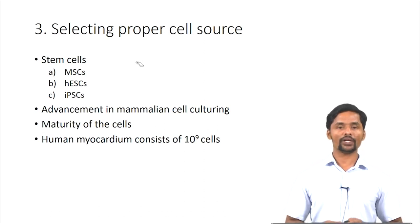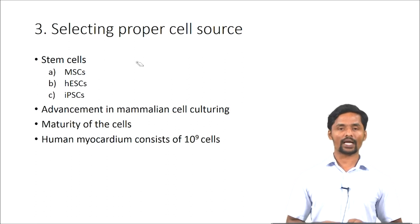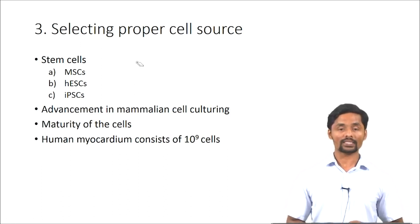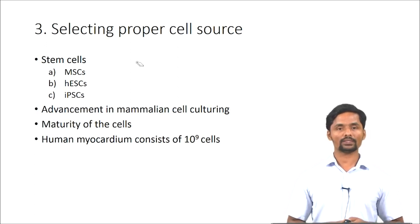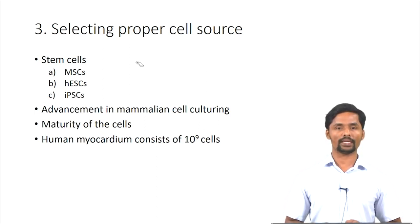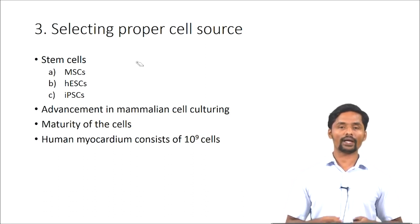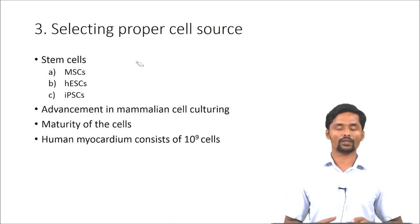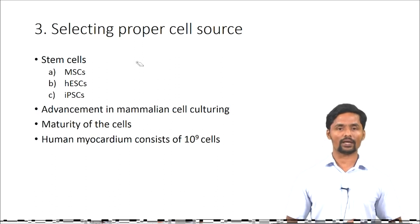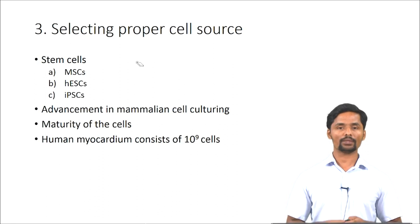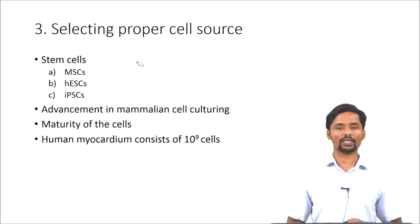A recent development is induced pluripotent stem cells (iPSCs). What they did was induce pluripotency in normal somatic cells by introducing 4 genes into mouse fibroblast cells, thereby reprogramming these somatic cells into stem cells. However, the problem with stem cells is that their proliferation capacity is very low in two-dimensional cell culture plates, making it difficult to harvest the required number of cells for tissue engineering applications. Advancements such as exposing stem cells to hypoxic conditions have led to improvement in their survival.